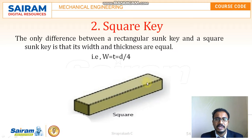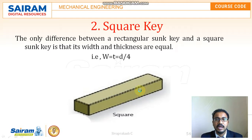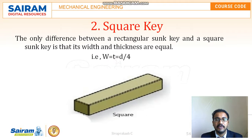For the square key, the important information to remember is: a square key and rectangular key — where the rectangular key is nothing but a piece of mild steel inserted between the shaft and hub of the pulley — connect them together in order to prevent relative motion between them. The key has a taper of 1 in 100 on the top side only. The only difference between the square key and the rectangular sunk key is that for the square sunk key its width and thickness are equal.